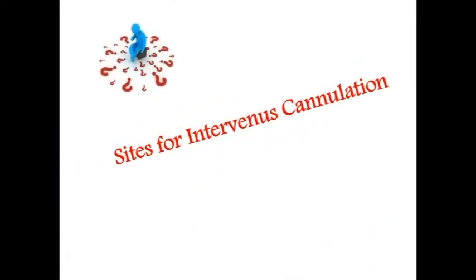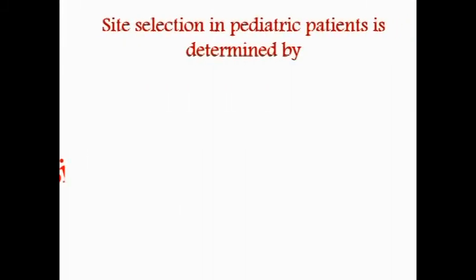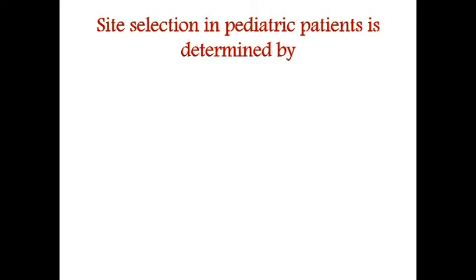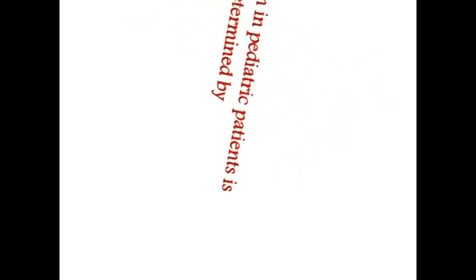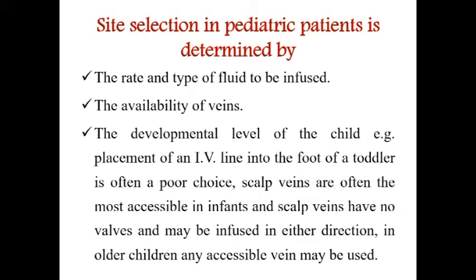Site for intravenous cannulation: Site selection in pediatric patients is determined by the type of fluid to be infused, the availability of veins, and the developmental level of the child. For example, placement of an IV line into the foot of a toddler is often a poor choice. Scalp veins are often the most accessible in infants, have no valves, and may be infused in either direction. In older children, any accessible vein may be used.